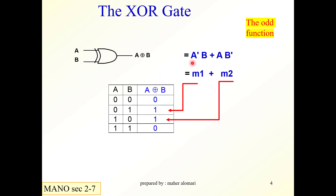A XOR B is equal to (A bar AND B) OR (A AND B bar). This is minterm 1 and this is minterm 2. This is the truth table — this gate is called the odd gate or odd function.